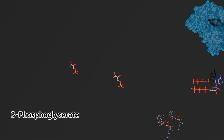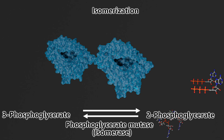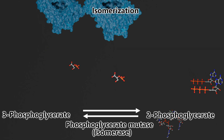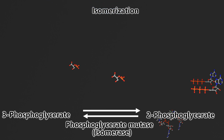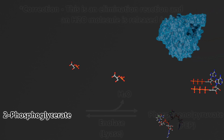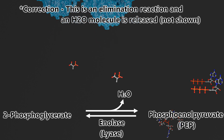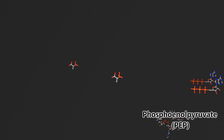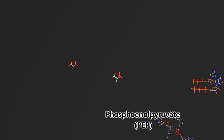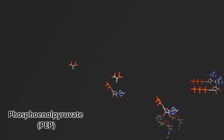Before removing our last phosphate, we first have to go through a couple of isomerization reactions. The first one is the isomerization of 3-phosphoglycerate into 2-phosphoglycerate by the enzyme phosphoglycerate mutase. Our next isomerization reaction takes 2-phosphoglycerate and isomerizes it into phosphoenolpyruvate using the enzyme enolase. So finally after all of these reactions we have gone down to phosphoenolpyruvate, also known as PEP.